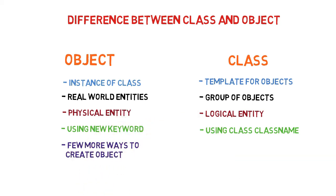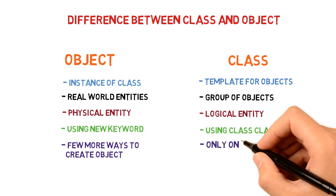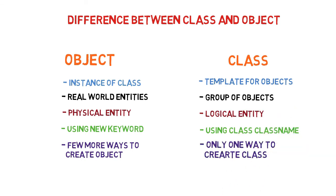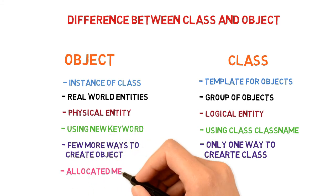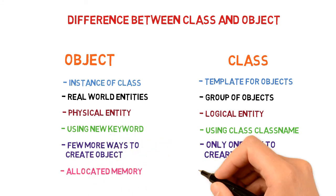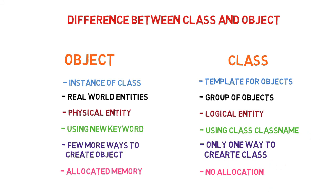There are a few more ways to create objects — this is not the only way — and we will see those in the next videos. There is only one way to create a class. When an object is created, it is allocated some memory, but this does not happen with the class. A class is not allocated any memory, but objects do get memory. That is another key difference. I hope you understood the concept of objects and classes in Java and these major differences.